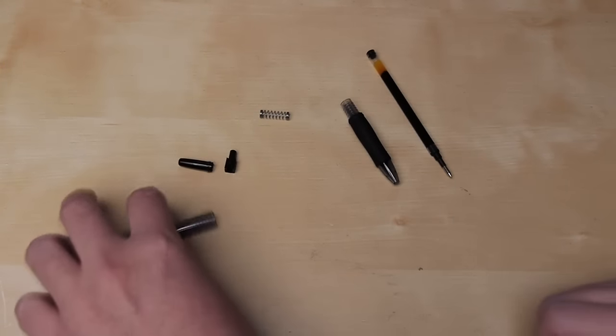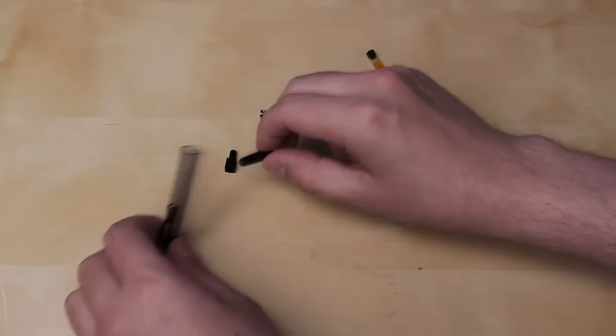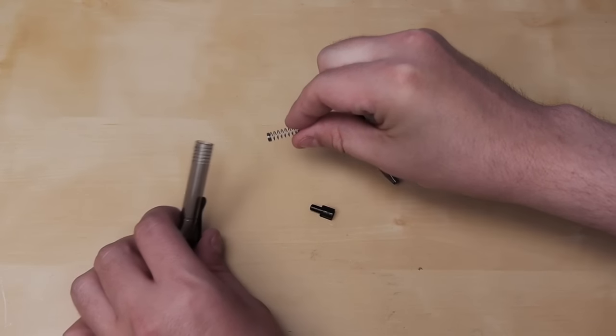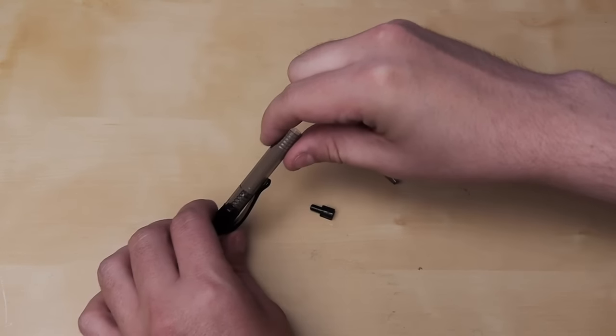Once you've got all your pieces laid out, go ahead and take the clicker part of the pen and drop it back in. Now grab your spring and drop it in as well.